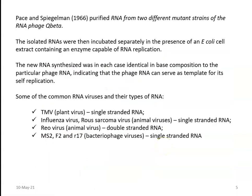Now we will look at one more experiment conducted by Pace and Spiegelman. They used purified RNA obtained from two different mutant strains of RNA phage Qβ. The isolated RNAs were incubated separately in the presence of E. coli cell extract containing an enzyme capable of RNA replication. The new RNA synthesized in each case was identical to the base composition of that particular phage RNA only, indicating that the phage RNA serves as a template for its self-replication and formation of new progeny.